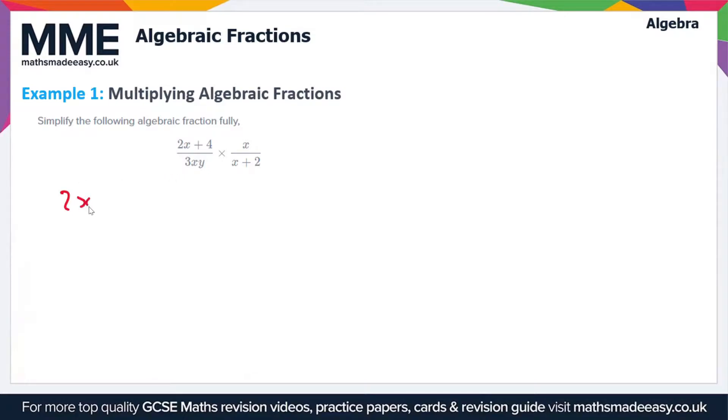We'll start with multiplying (2x+4)/(3xy) by x/(x+2). The rule when we're multiplying two fractions together is that we multiply the numerators and the denominators together separately, so we get (2x+4)×x divided by 3xy×(x+2).